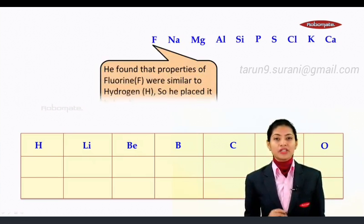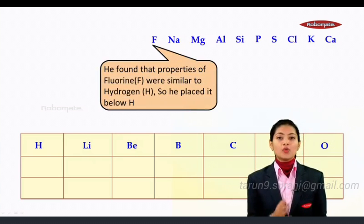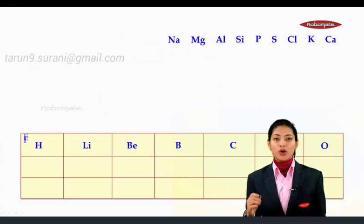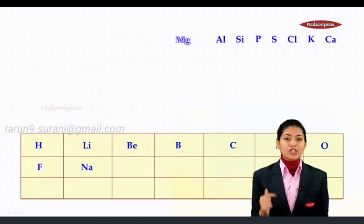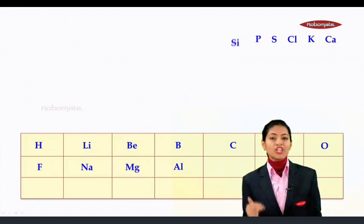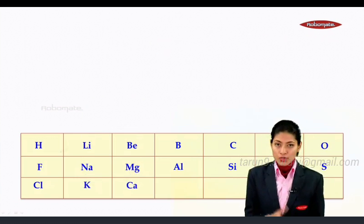But when he came to element fluorine, he realized that the property of fluorine was similar to that of the element hydrogen. So he placed fluorine below hydrogen. Similarly, he placed sodium below lithium because of similar property, magnesium below beryllium, aluminum below boron, silicon below carbon, phosphorus below nitrogen, and sulfur below oxygen. Same went for chlorine below fluorine, potassium below sodium, and calcium below magnesium.